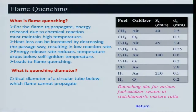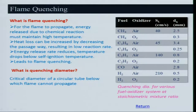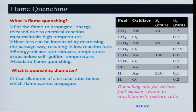Some data: for methane-air the quenching diameter is 2.5 mm; for methane-oxygen it is reduced to 0.3 mm. For propane-air the quenching diameter is 0.8 mm (burning velocity ~140 cm/s) compared to methane-air (~120 cm/s). For hydrogen-air the burning velocity is high and quenching diameter is smaller. Adding oxygen reduces quenching diameter significantly.